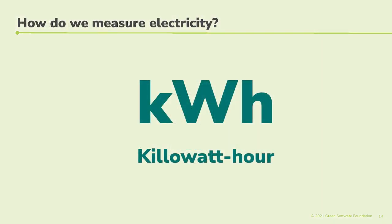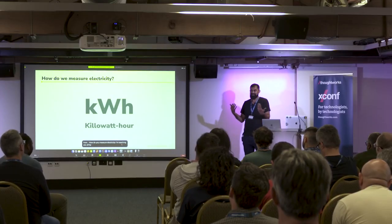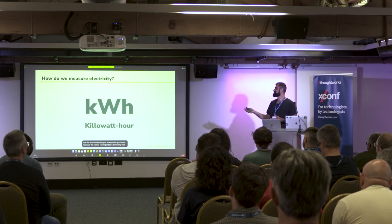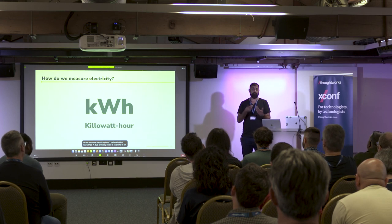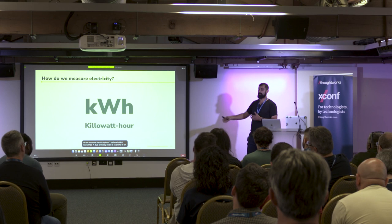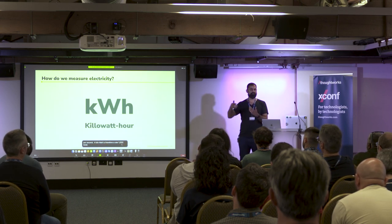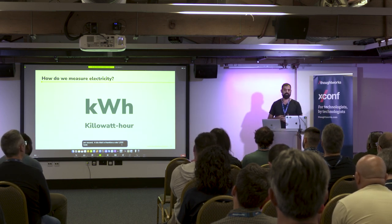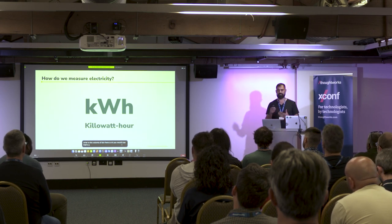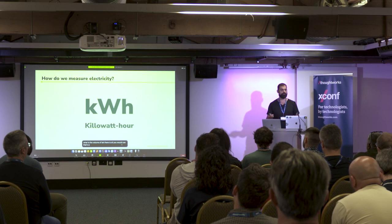How do we measure electricity? I'm teaching all these terms because I'm going to show you an equation to measure the carbon score of software, and you need to know all the terms. A joule is a volume of electricity. A watt is a rate — one joule per second. A kilowatt is 1,000 joules per second. A kilowatt hour is a volume of electricity: if you let that rate run for an hour, that's the volume you'd use. That's one of the ways you measure the volume of electricity your software is using.